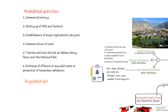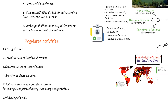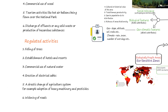Activities which are regulated include: felling of trees, establishment of hotels and resorts, commercial use of natural water, erection of electrical cables, a drastic change of agricultural system — for example, adoption of heavy machinery and pesticides — and widening of roads.